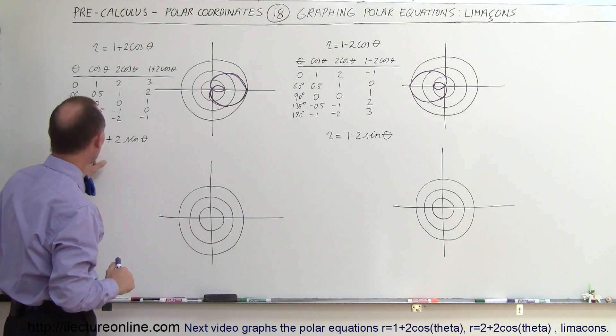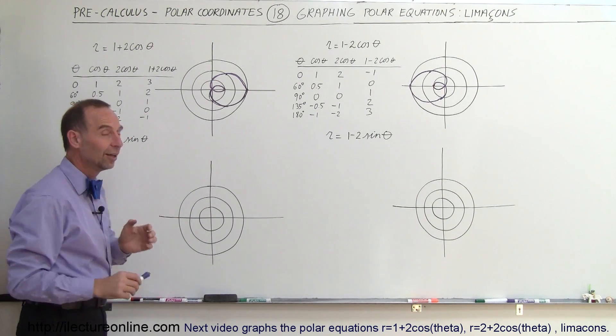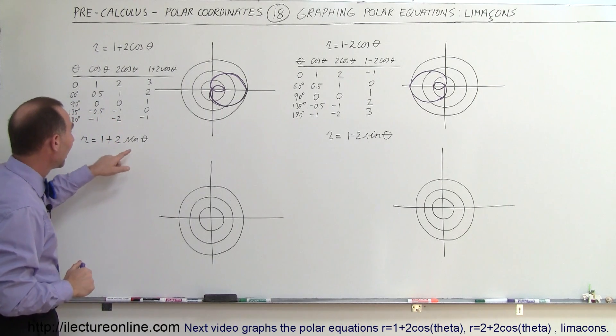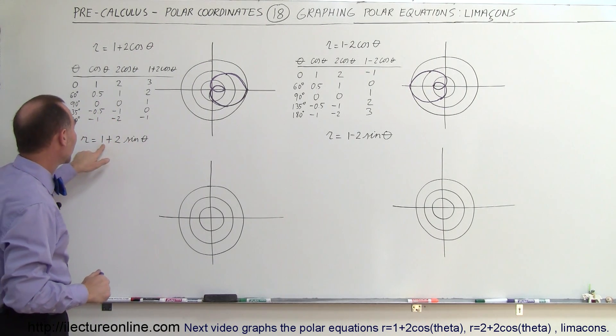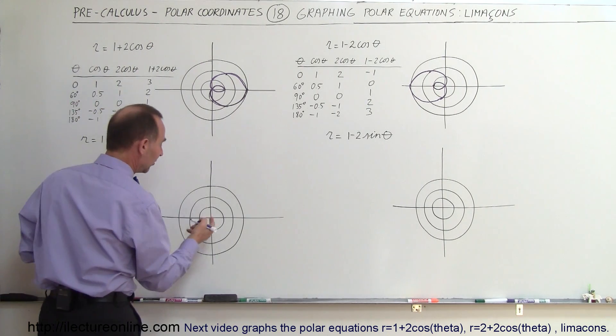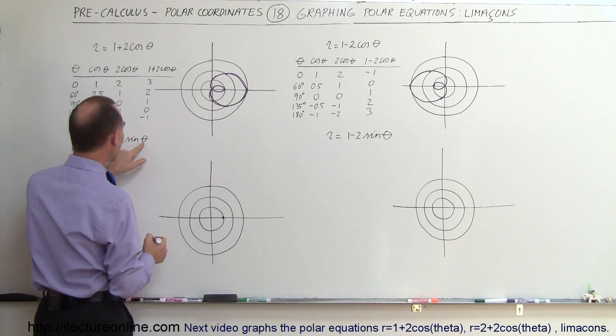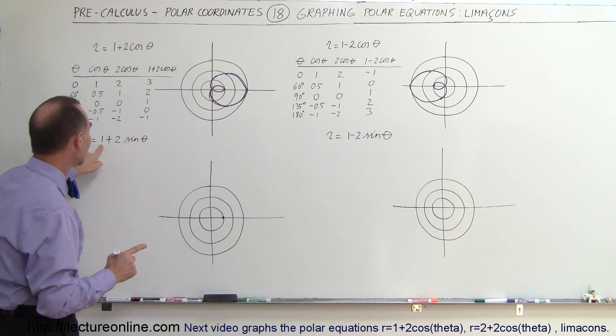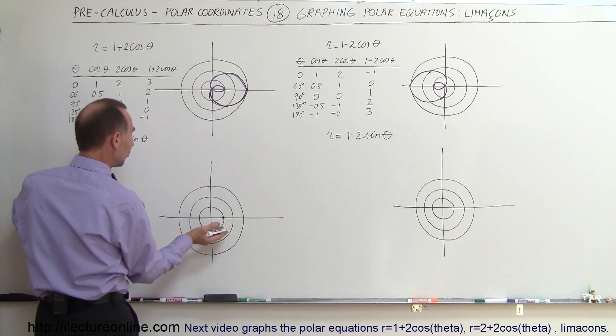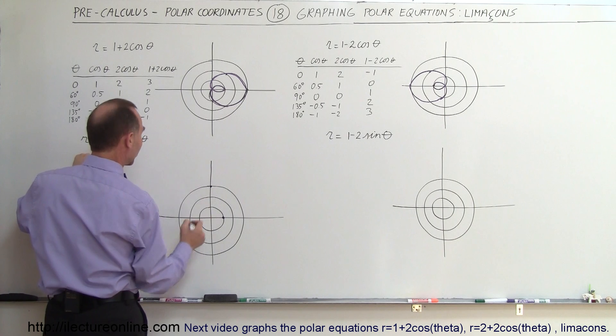So what do you think we're going to get when we have 1 plus 2 times the sine of theta? Some quick checks can help us. At 0 degrees, we get equal to 1. So at 0 degrees, we get a 1. So that would be right there. At 90 degrees, sine of 90 is 1. That would give us 2 plus 1 is 3. So at 90 degrees, we're over there.